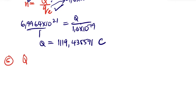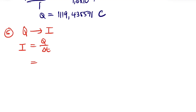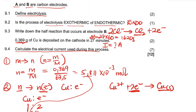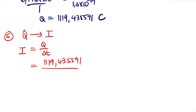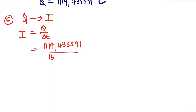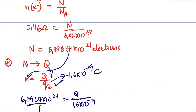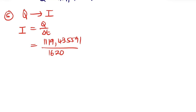Step 5: convert charge to current using I = Q/Δt (from the data sheet). Substituting: I = 1.11944 ÷ 1620 seconds. The current is 0.69 amperes. That is how you calculate the electrical current from the mass of copper deposited.